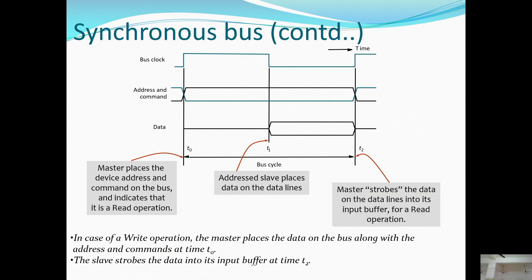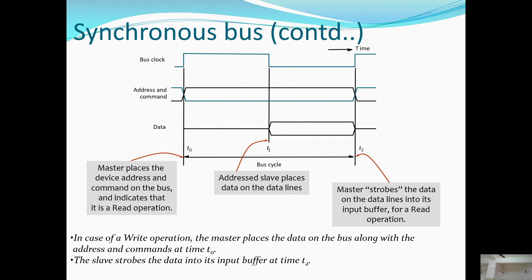In a synchronous bus read operation, the master places the device address on the bus and indicates it is a read operation. The addressed slave device places data on the data lines, and the master strobes the data on the data lines into its input buffer. For a write operation, the master places the data on the bus along with the address and commands at time T0; the slave strobes the data into its input buffer at time T2.